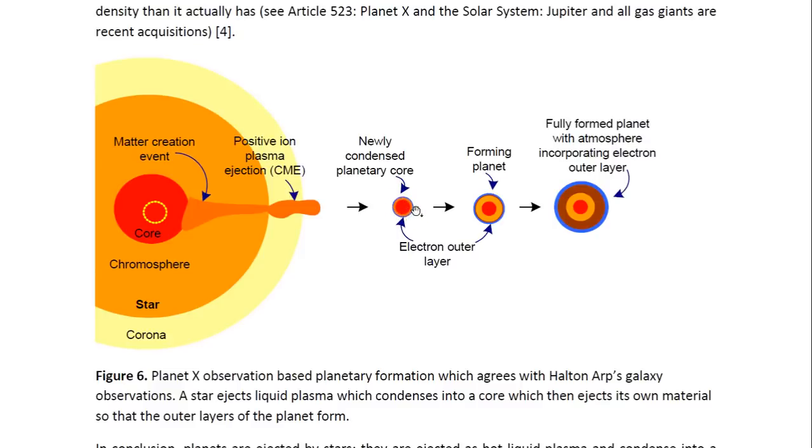Which then condenses into a planetary core, and it will then immediately start forming its own matter. It will from the beginning be able to have an electron layer on the outside, which insulates it, but it will not immediately have an atmosphere. It will just have electrons on the outer layer, which will be molten magma, basically. It will increase that molten matter slowly, and also the outer surface will start solidifying into a solid layer.